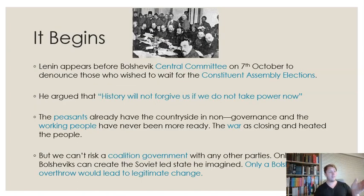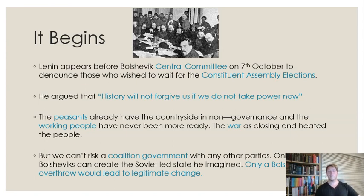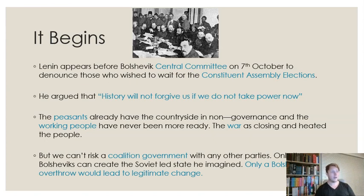On the 7th of October, the Central Committee of the Bolsheviks met with Lenin, who denounced those within the party saying they should wait for the Constituent Assembly in a couple of months — be voted in legitimately, then make radical changes with legal backing. Lenin said no: we've got our perfect storm right now, we can't wait. He declared out loud, 'History will not forgive us if we do not take power now.' He felt that if they waited too long, they'd miss the opportunity.